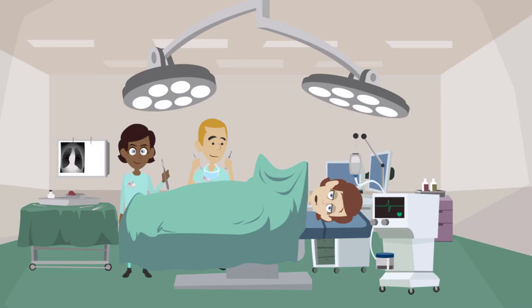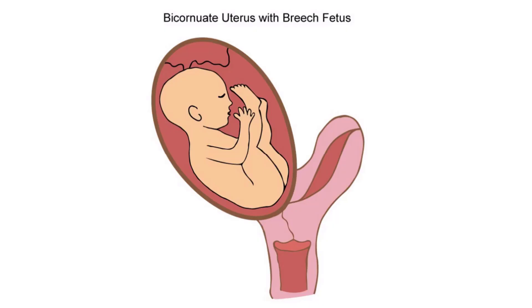In the operating room, the fetus is mostly on the maternal right. When exploring the uterus, an indentation is felt in the upper cavity consistent with two uterine horns. This is most consistent with a bicornuate uterus. What causes the bicornuate uterus?